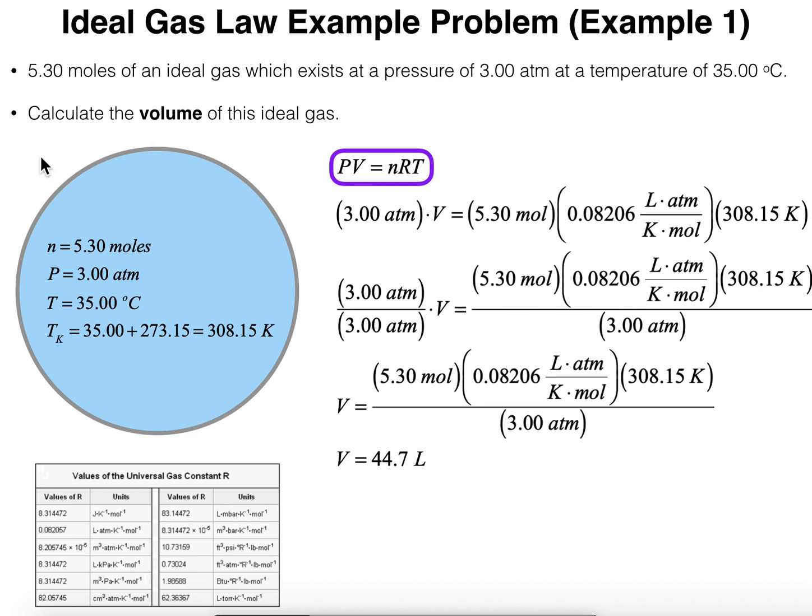In the next few videos we're going to be doing some basic calculations using the ideal gas law that you may see in a general chemistry course. So let's do the first example in this video. We've got 5.30 moles of an ideal gas which exists at a pressure of 3.00 atmospheres at a temperature of 35 degrees Celsius, and we want to calculate the volume of this ideal gas.